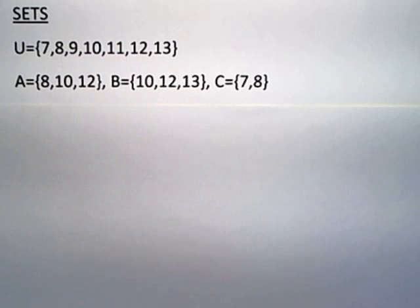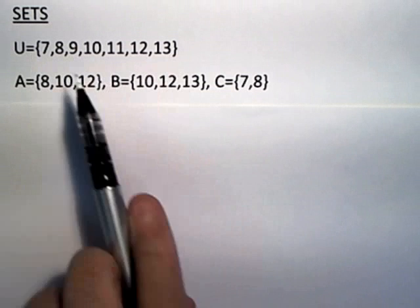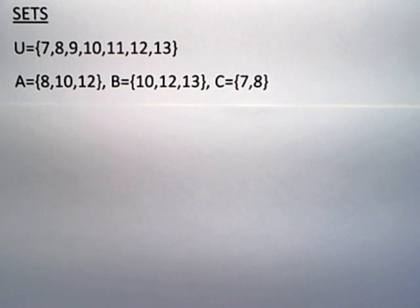Remember, the universal set is the superset of everything that is possible in a particular context of a problem. So the only numbers that are possible are the numbers listed in the universal set.